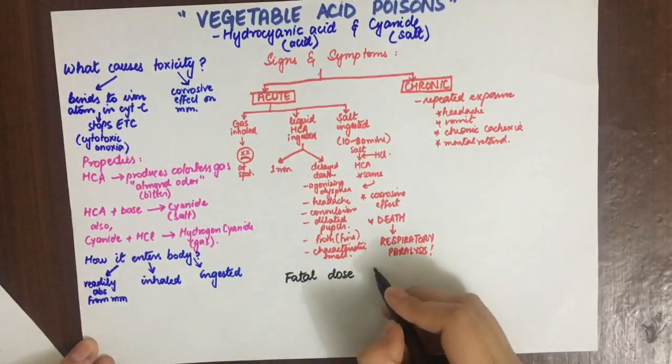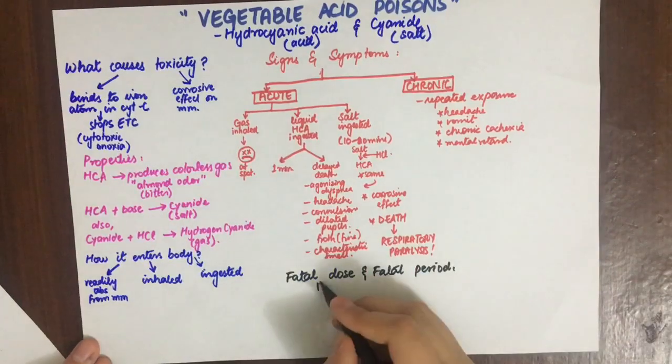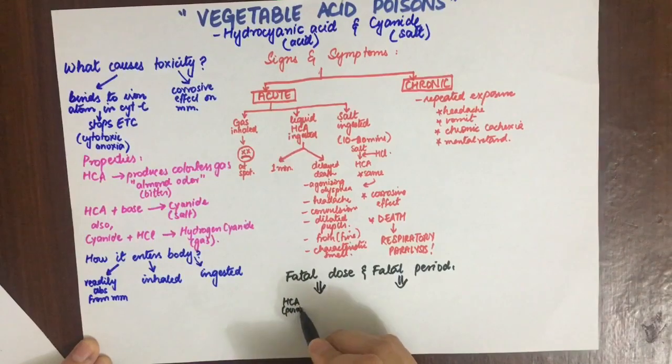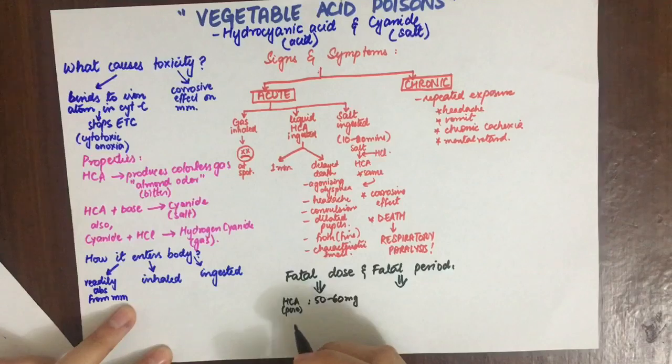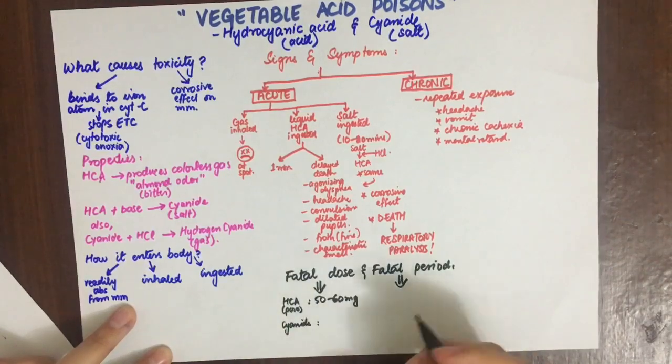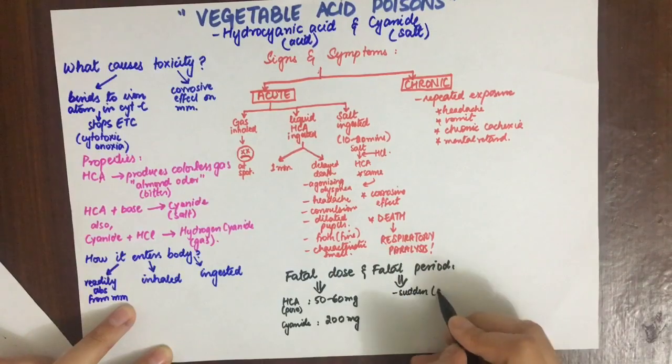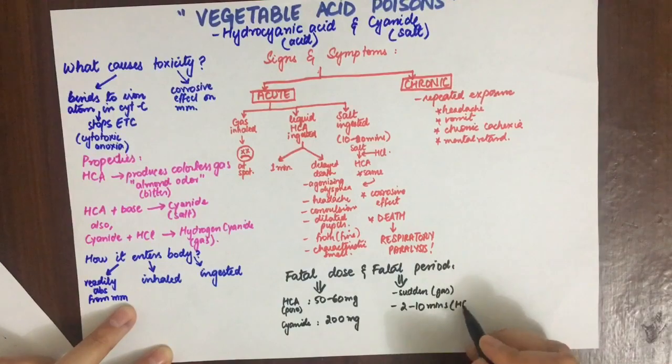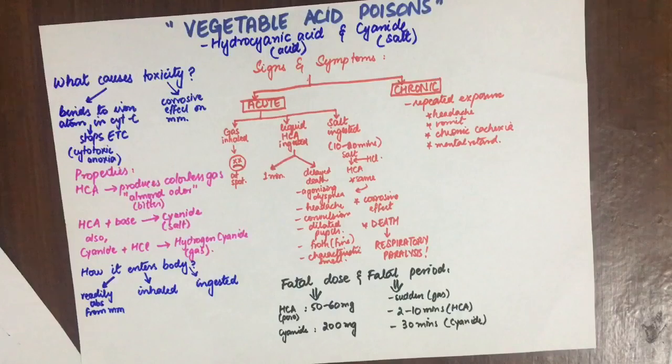The fatal dose and period: in the case of pure hydrocyanic acid, 50 to 60 milligrams is required to cause death, and 200 milligrams of potassium cyanide causes death. Death can be sudden if the gas is inhaled, it can take 2 to 10 minutes if hydrocyanic acid is ingested, and 30 minutes if potassium cyanide is ingested.